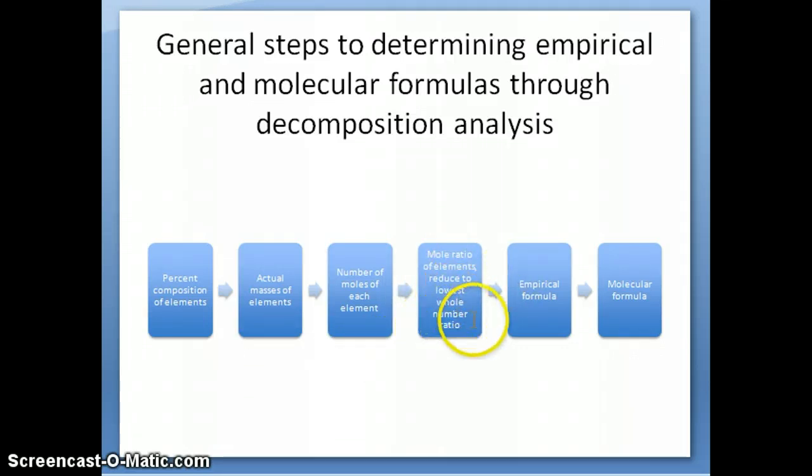Once you have the lowest whole number ratio among the elements in terms of number of moles, then you need to propose an empirical formula based on those ratios. And then from the empirical formula, if you have the molar mass, you can use it to figure out the molecular formula.